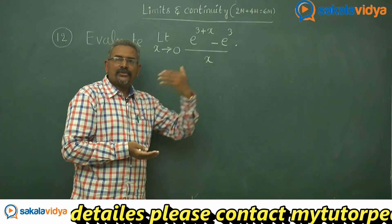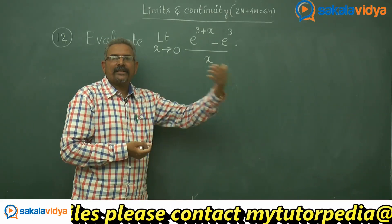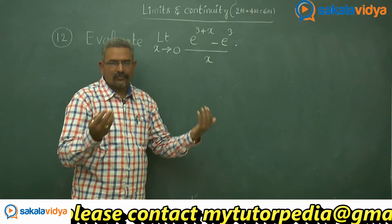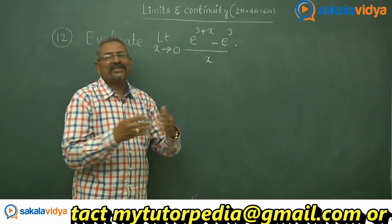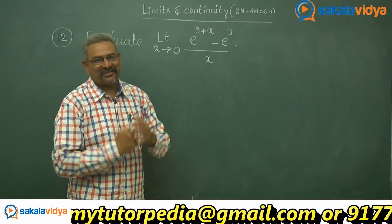Limit x tends to 0, e power x minus 1 by x is 1. So e cube into 1 — the answer is e cube.